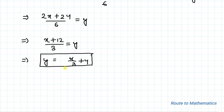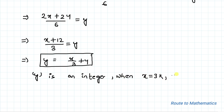From this, we can say that for values of x that are divisible by 3, y is an integer. So y is an integer when x = 3k, where k is an integer. That is our answer. I hope you have understood the solution. Thanks for watching. Please subscribe to my channel and click the bell icon for more such interesting videos. Thank you.